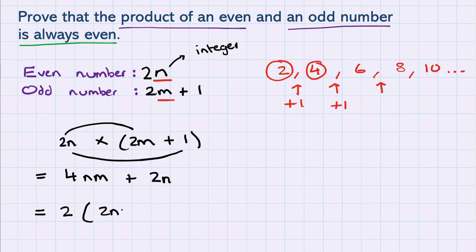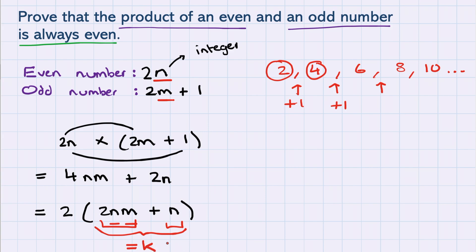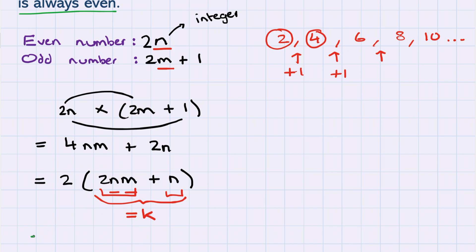We're trying to prove that it's always even. Remember, if a number is even it will be a multiple of 2, so we should be able to take a factor of 2 out — and yes, we absolutely can. That gives us 2(2nm + n). Since n and m are integers, nm is also an integer, and adding integer n to nm gives another integer — let's call it k. Overall we can write this as 2k, which is of the same form as 2n, so it must be an even number. We have shown that the product of an even and an odd number is always even.